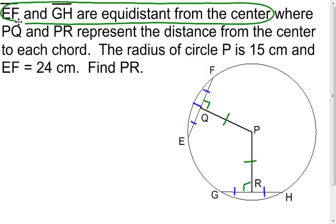Now, I know I can put single ticks everywhere because segment EF and segment GH are equidistant from the center, which means they're congruent. So if you bisect them, both of the pieces on each segment are going to be congruent as well.